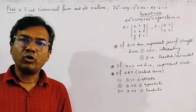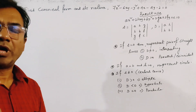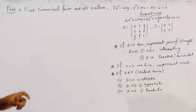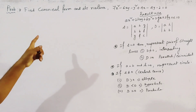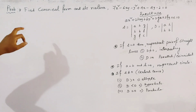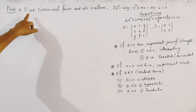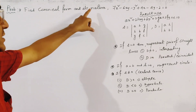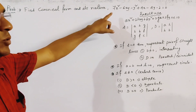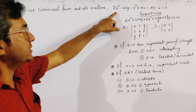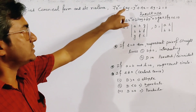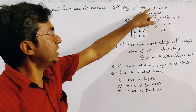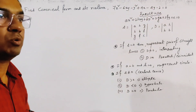Today's problem is from two-dimensional geometry, specifically from the general equation of second degree. The problem says: find the canonical form and the nature of the conic given by 7x² - 6xy - y² + 4x - 2y - 2 = 0.